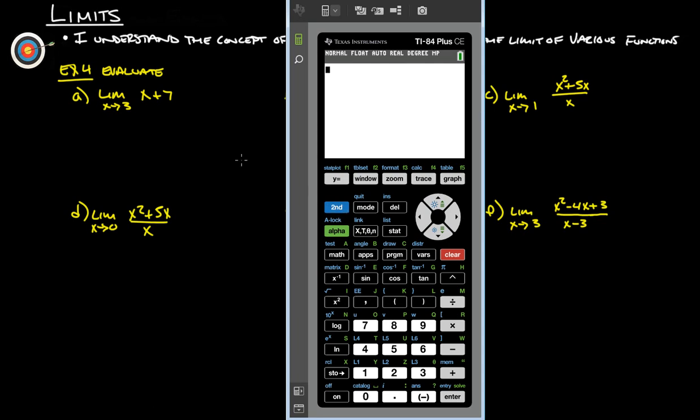So we got the limit as x approaches 3 of x plus 7. So all we want to do on the y equals, get into that, clear anything out that's already in there. And then we're going to go in here and we're simply going to put in x plus 7 and graph that thing. Let's see. This window looks goofy. So I'm going to do zoom and I'm going to do standard.